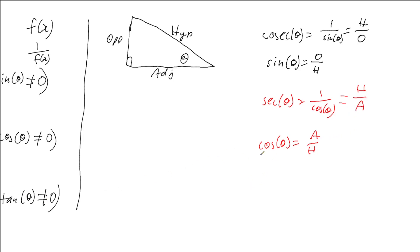And then lastly, having a look at cot of the angle, which we know is 1 over tan of the angle. Well tan we know is defined as opposite over adjacent, which means that cotangent will be adjacent over opposite.